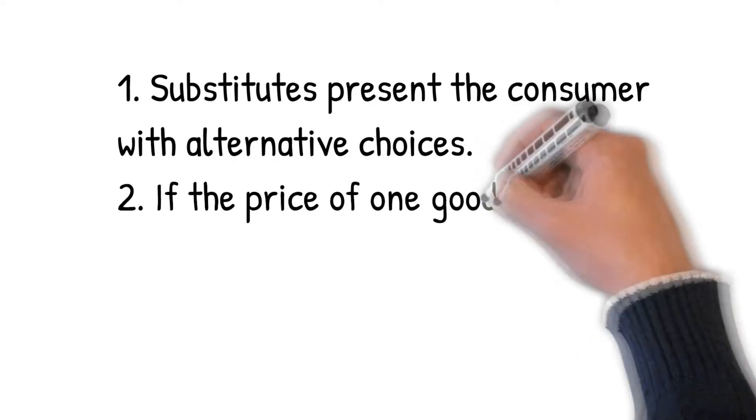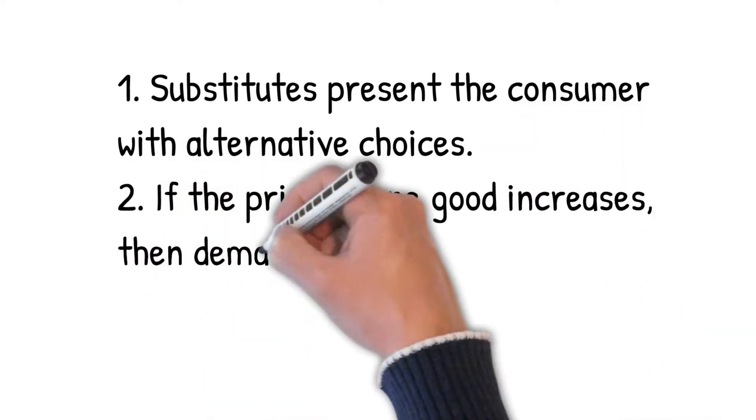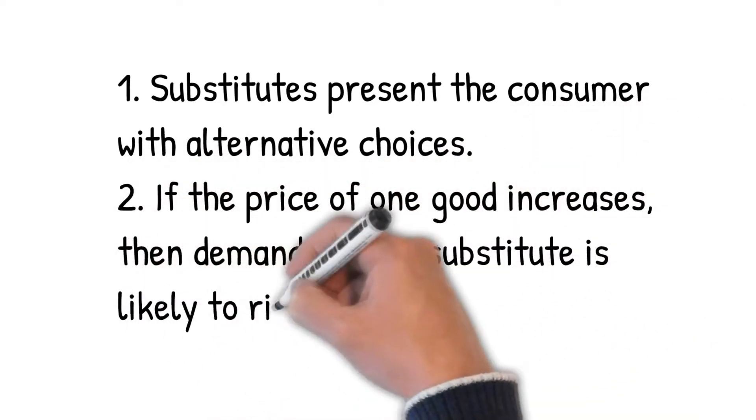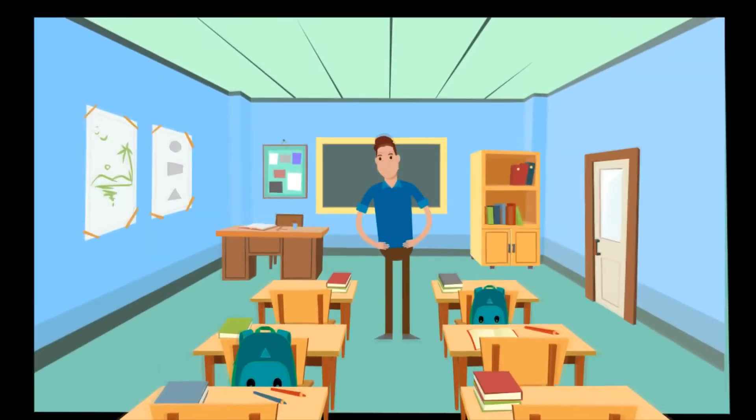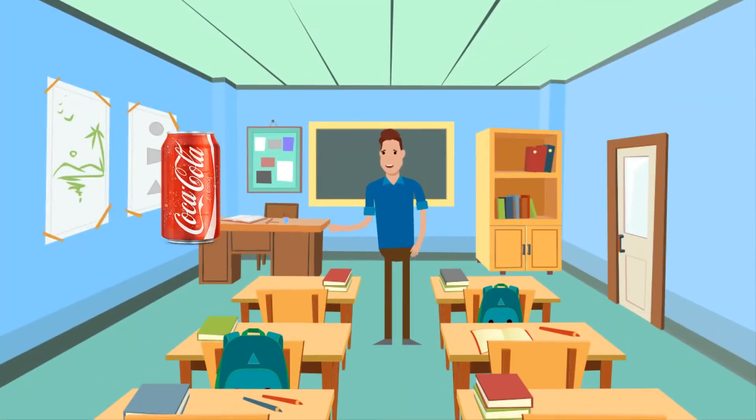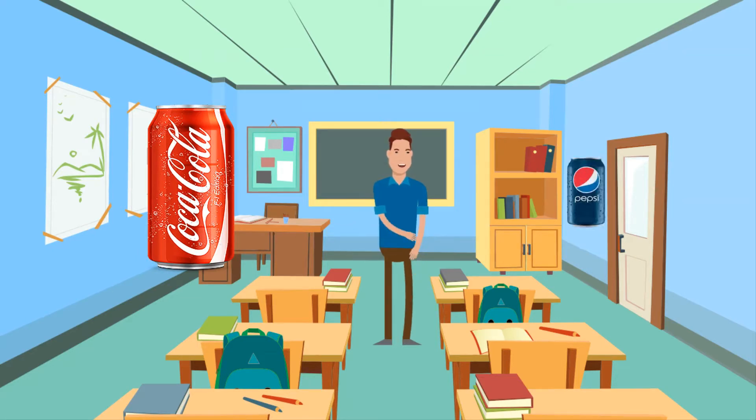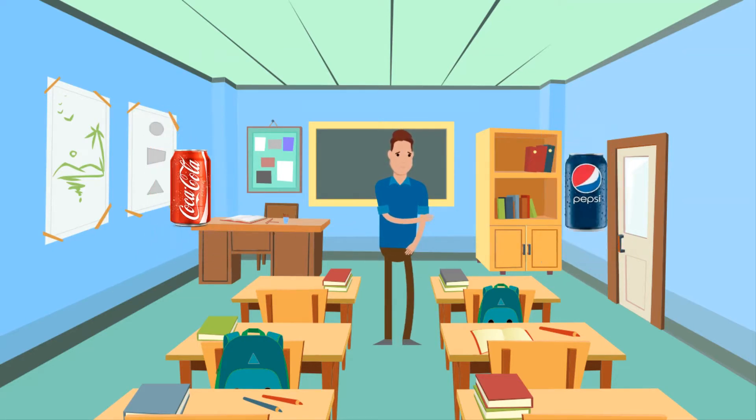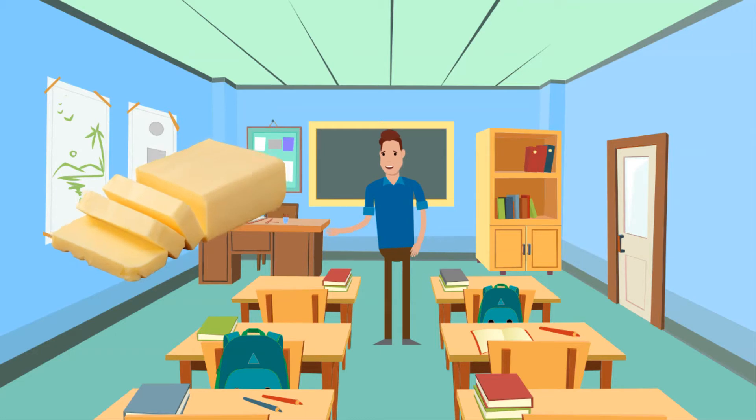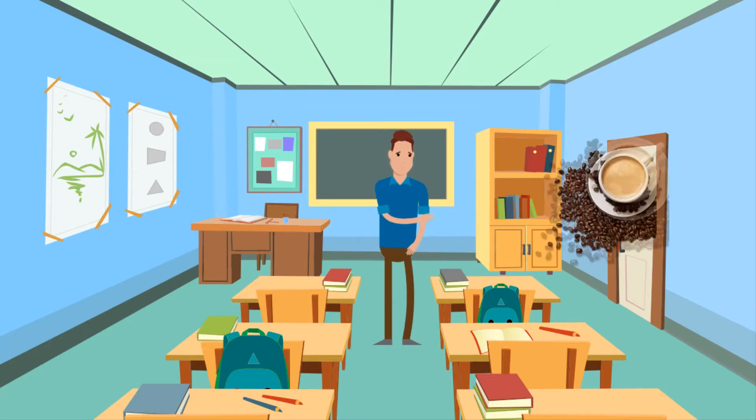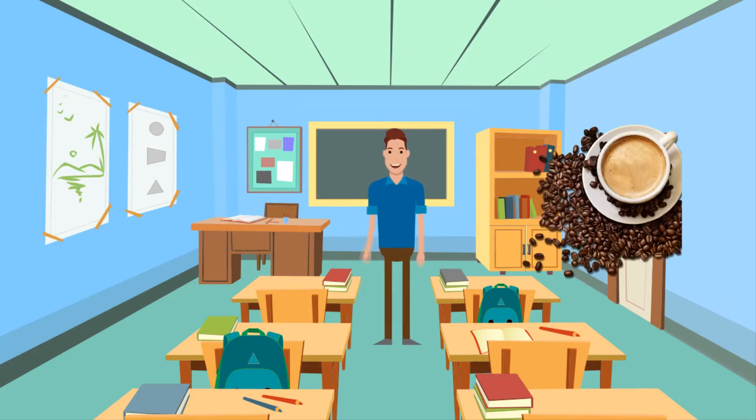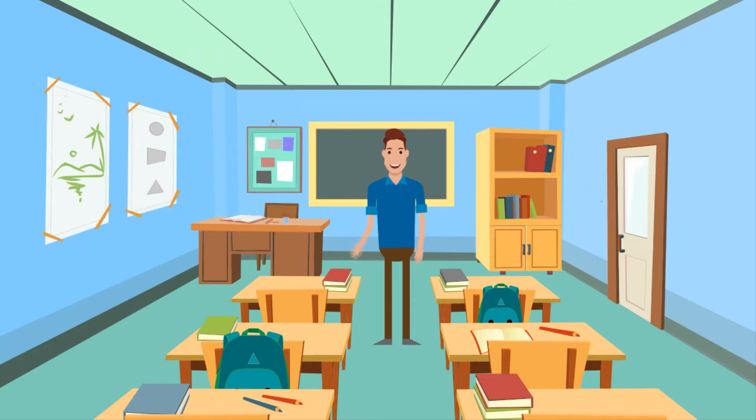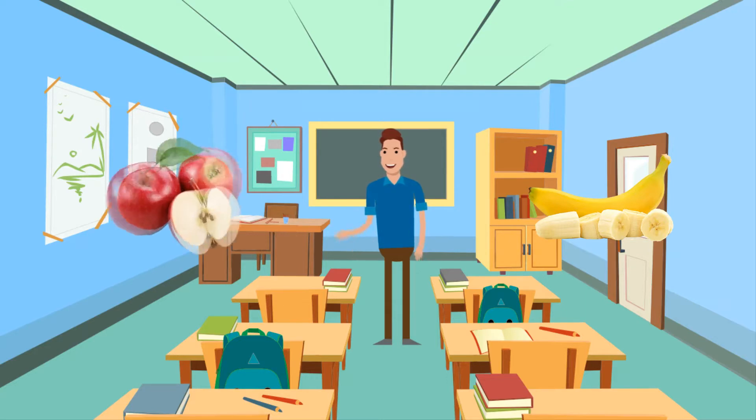If the price of one good increases, then demand for the substitute is likely to rise. Examples of substitutes are things like Coca-Cola or Pepsi, butter or margarine, coffee or tea, bananas or apples.